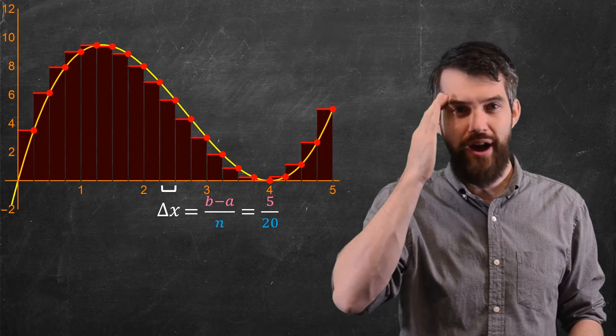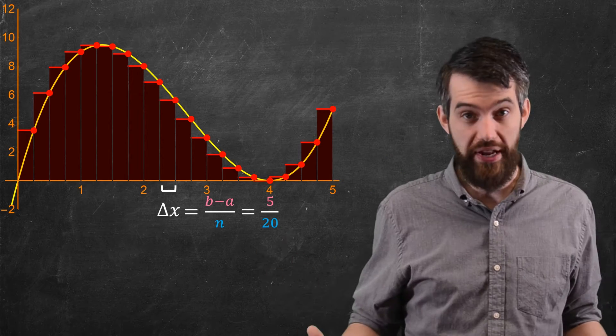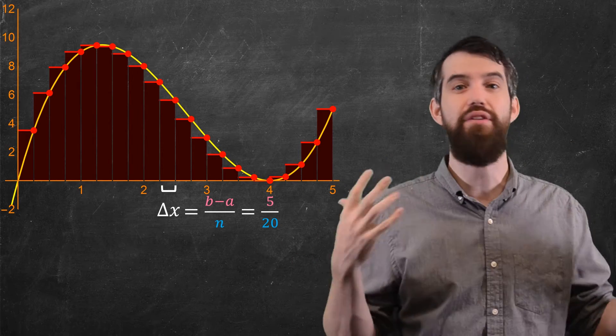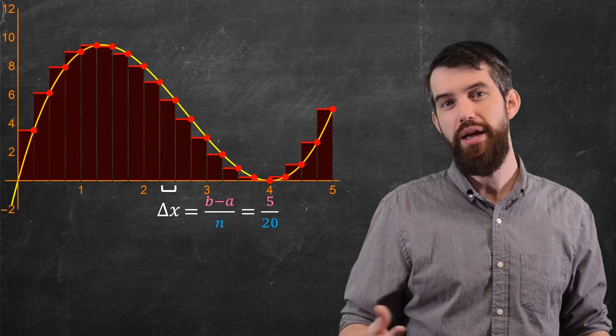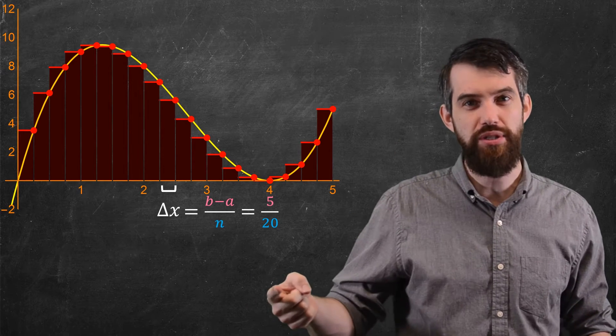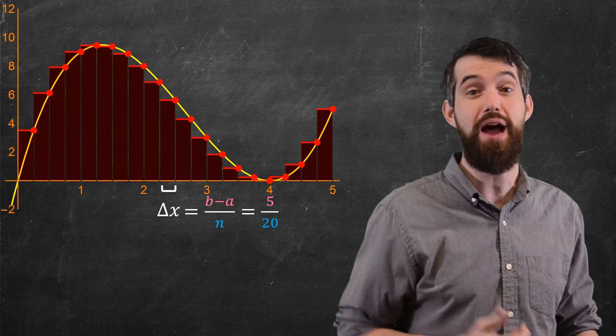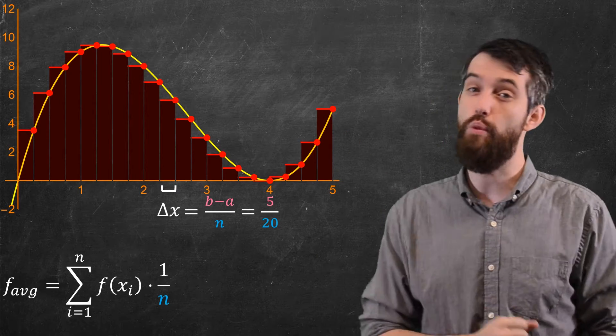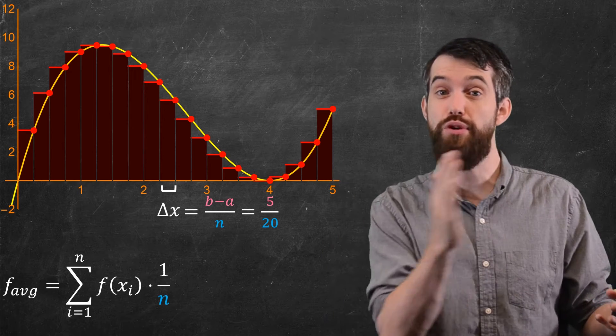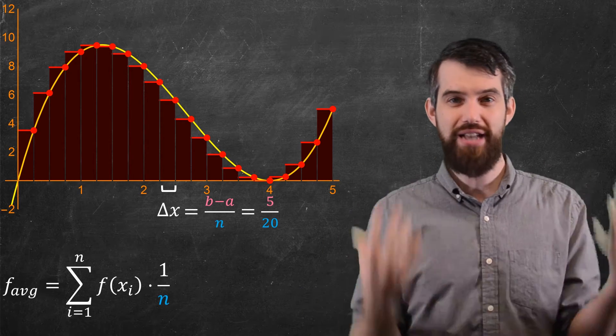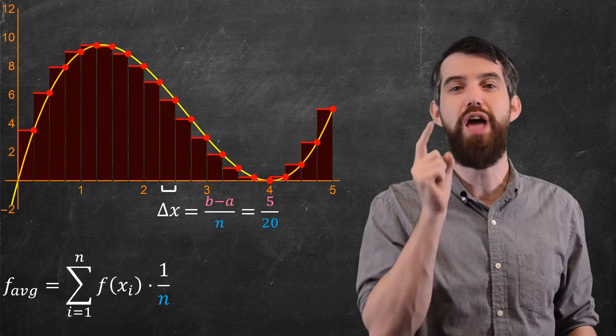So now let's think about what the average value should be. The average of a list of points of these f of x1 down to f of x20. Well, you take the sum of all the values, and then you divide out by the 20. In general, you divide out by n. So my general formula for the average is going to be the sum from 1 up to n, where n's my number of subdivisions, the f of xi, and then I have to multiply by that 1 over n.